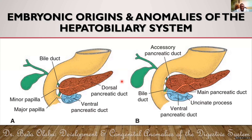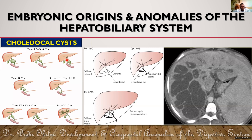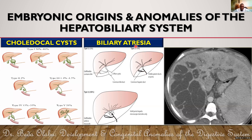Now let's talk about malformations of the biliary tree. The commonest malformations are choledochal cysts — cystic dilatations of the biliary tree — and biliary atresia, where parts of the biliary tree are atretic and have no lumen. These are the commonest congenital anomalies of the biliary system.